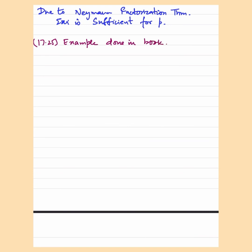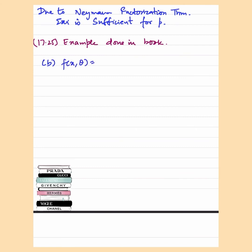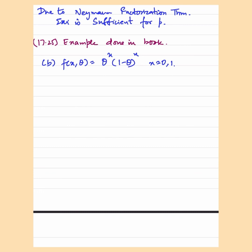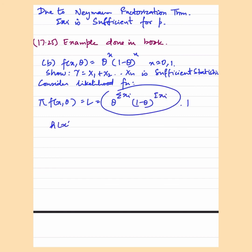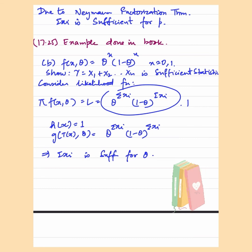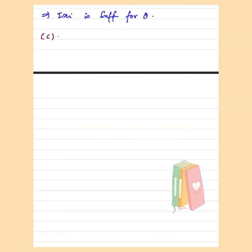We have already done 17.25 a lot of times, where x belongs to uniform 0 theta, so without further ado let's move on to the next question. f(x; theta) equals theta to the power x into 1 minus theta to the power x, where x takes values 0 and 1. We have to show that summation xi is a sufficient statistic for theta. The likelihood function is L equals theta to the power summation xi into 1 minus theta to the power summation xi. Here h(x) equals 1 and g(T(x), theta) equals theta to the power summation xi into 1 minus theta to the power summation xi. We see that summation xi is sufficient for theta.